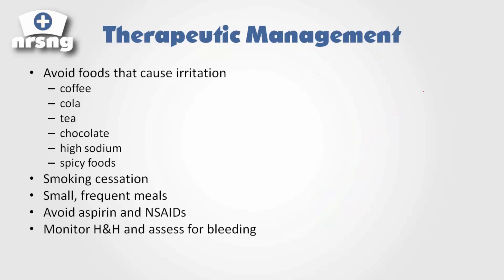For management, the first thing we want to do is teach patients about foods that cause additional irritation: coffee, cola, tea, chocolate, high-sodium, and spicy foods — similar to what we see with GERD. Teach them to avoid these foods, stop smoking if they smoke, and eat small, frequent meals. Bringing in less food results in less gastric acid secretion, which can help reduce pain.